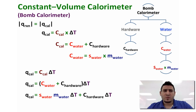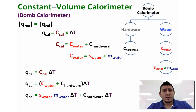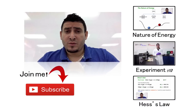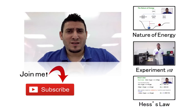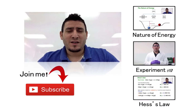The main difference between a constant volume calorimeter and a constant pressure calorimeter is that the constant volume calorimeter has a heat capacity. I hope this video is helpful — please like, share, and subscribe, and I'll see you next time.